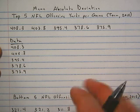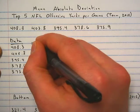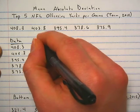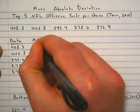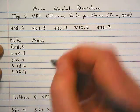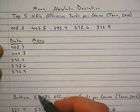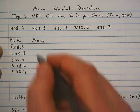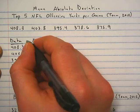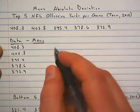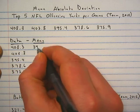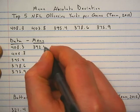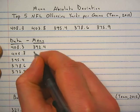Once we have our first column, we're going to create a second column called 'mean.' We're going to fill it in all the way down with the mean of our first column. I've already done the calculations ahead of time and it's 392.4.